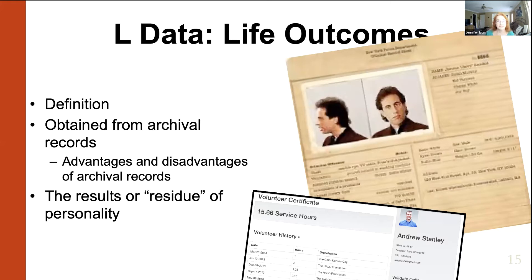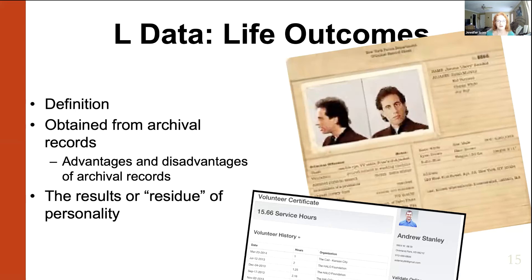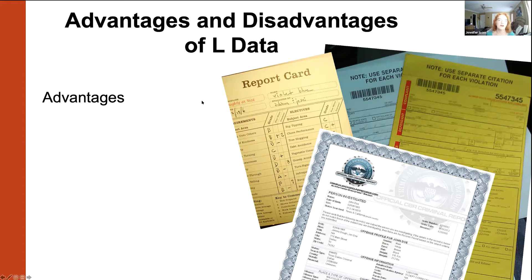This is the residue of your personality, and to be truly life outcome data, it has to be recorded or noted by someone other than you. Thinking of social media — it is sort of the residue we leave behind, but you could argue it's self-report because you're influencing what you put online. Or someone could argue it's behavioral because it's your behavior. Not every type of data fits neatly into one of these four types. Examples of real life outcome data: speeding tickets, medical records, IRS records, report cards, criminal reports — all recorded by someone other than the target.